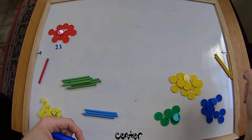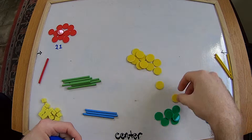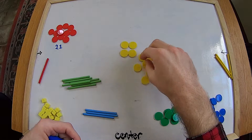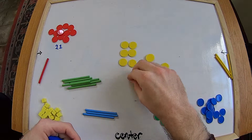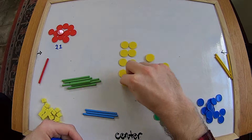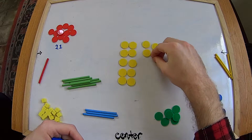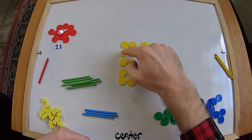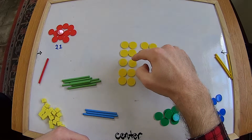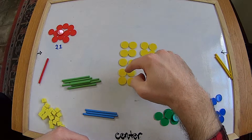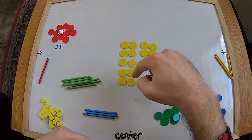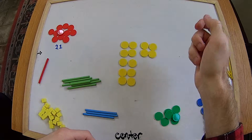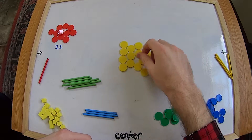How about we do our yellow counters next? We're going to spread them out so they're nice and easy to count - we don't want to count the same one twice by accident. Let's give a count of these yellow counters: one, two, three, four, five, six, seven, eight, nine, ten, eleven, twelve, thirteen, fourteen yellow counters.